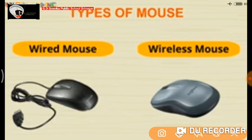Types of Mouse: We have two types of mouse — Wired Mouse and Wireless Mouse. A Wired Mouse is the type of mouse which has a wire attached to the CPU.